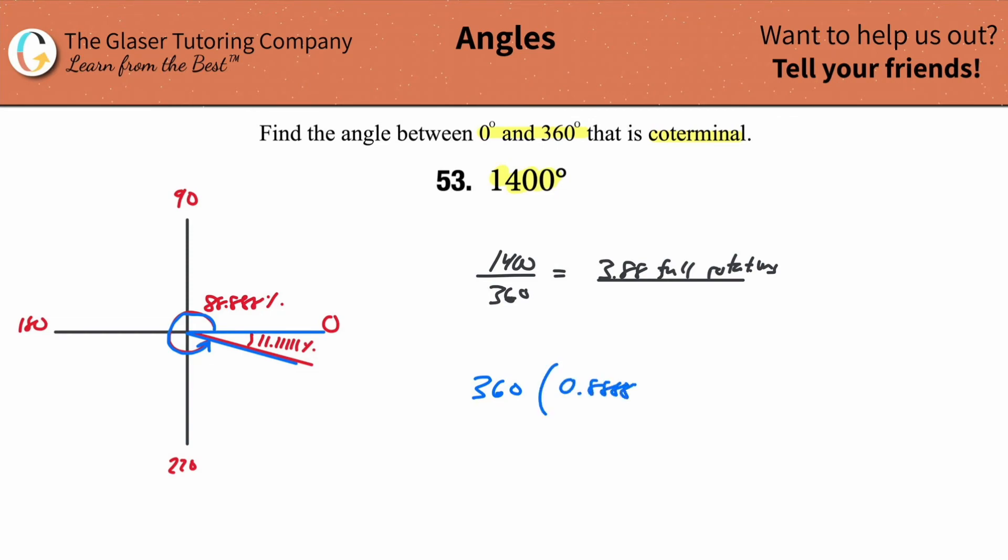And what's 88.8888% of 360? We can just multiply by the decimal, 0.8888, exactly. So just do that: 360 multiplied by 0.8888. And that works out to be 320 degrees. And that's exactly what we needed to find. This represents now the angle here, the coterminal angle.